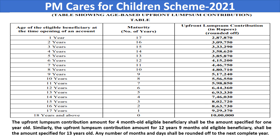Now we will see the PM Cares for Children table showing the age-based upfront lump-sum contribution. If the age of the eligible beneficiary at the time of opening the account is one year, maturity will be after 17 years, totalling 18 years, and the upfront amount deposited is 2,87,870 rupees. For a two-year-old child, 3,00,000 rupees will be deposited; for three years, 3,33,000 rupees, and so on up to 17 years, for which the amount is 9,29,370 rupees.